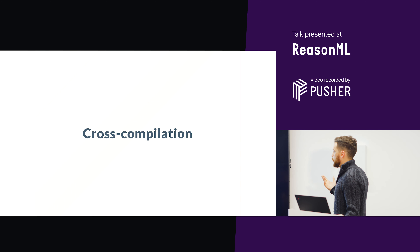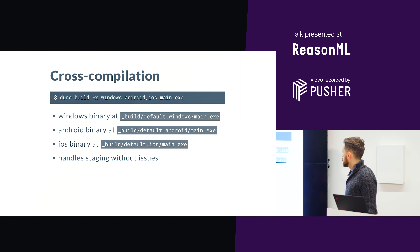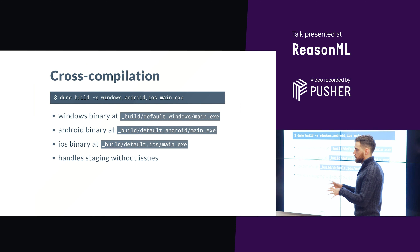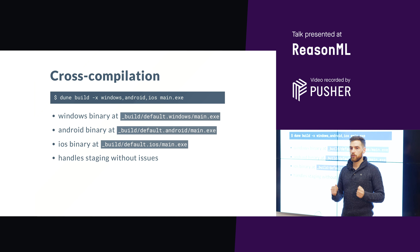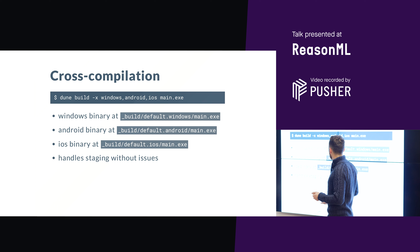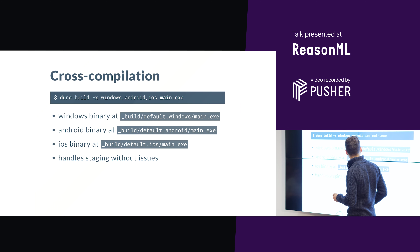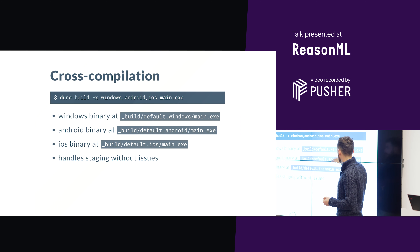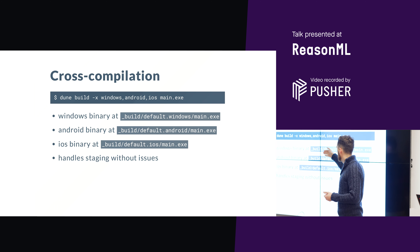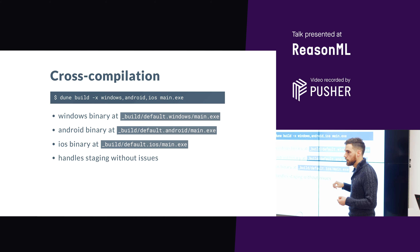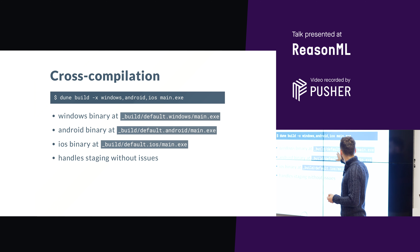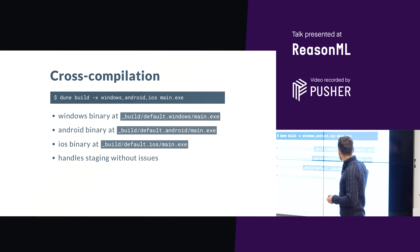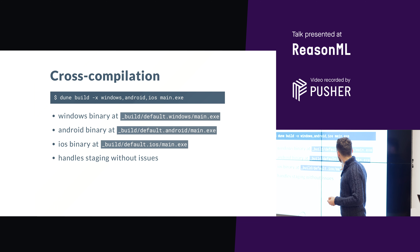Dune also supports cross-compilation out of the box. As long as you have all the cross-compilers installed on your system, you can just ask Dune to build for various architectures, and it will provide you the different binaries in the build directory at different places — for example, in '_build' you have paths like 'default.windows', 'default.android', etc.